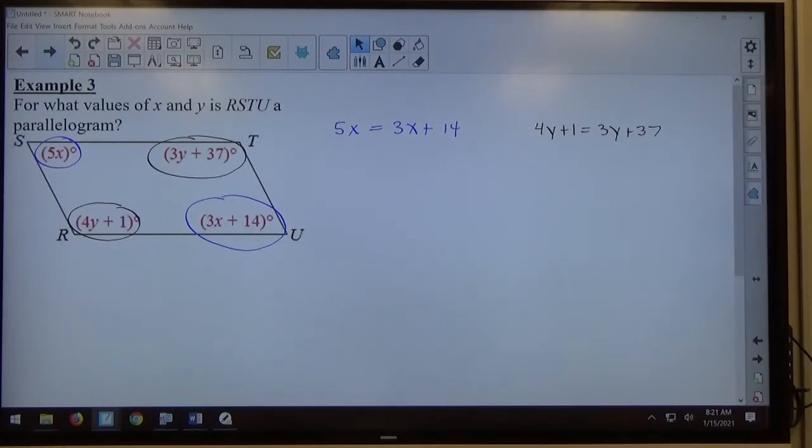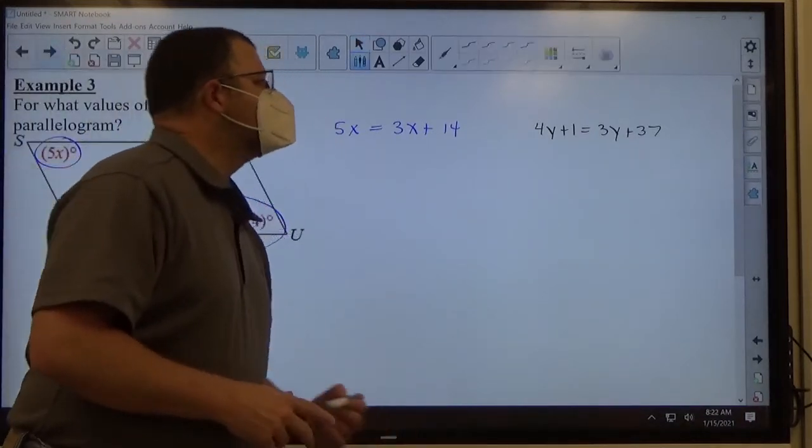So again, if both pairs of opposite angles are congruent, then it's a parallelogram. So we construct the equations, we solve the equations.